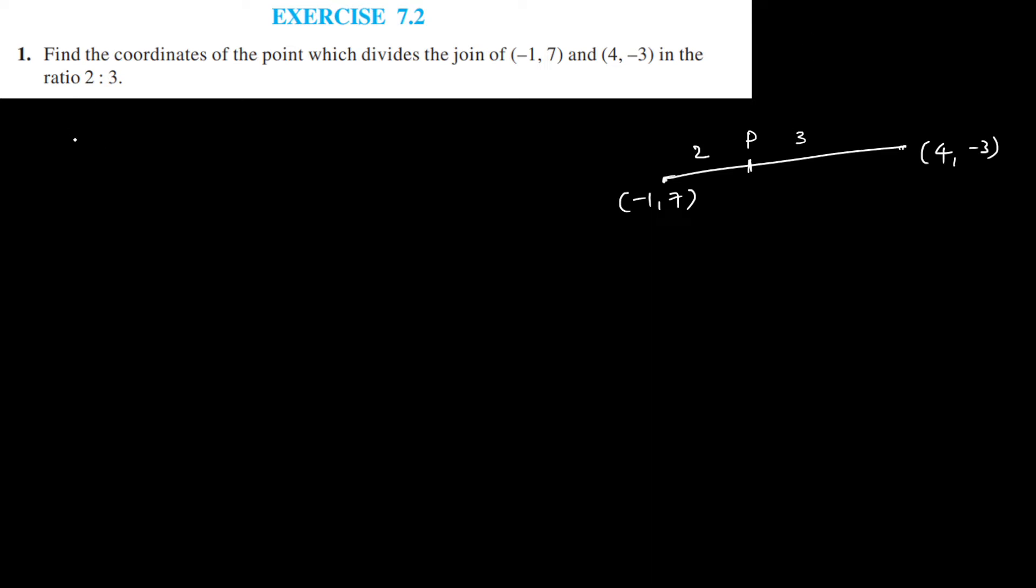Given points, let A equals (-1, 7) and B equals (4, -3), and they are divided in the ratio M1 is to M2 equals 2 is to 3. That means M1 can be taken as 2 and M2 can be taken as 3.